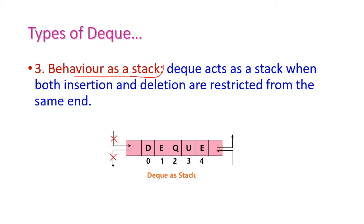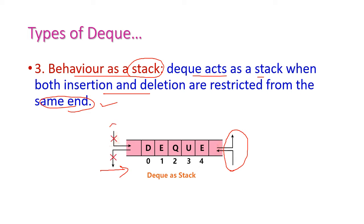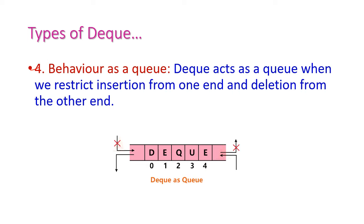The third type is behavior as stack. The DEQ will act like a stack when both insertion and deletion are restricted to the same end. That means, in one end we cannot insert or delete, and at the other end — for example, the rear side — we can insert or delete. If we insert and delete at the rear side, then the DEQ will act as a stack. The fourth type is behavior as queue. The DEQ will act as a queue when insertion is from one end and deletion from another end — insertion at rear and deletion at front — just like a normal queue.